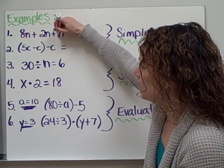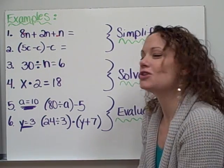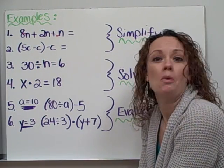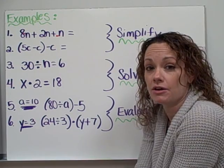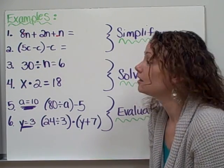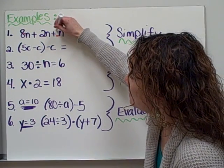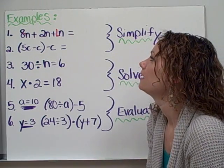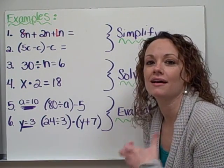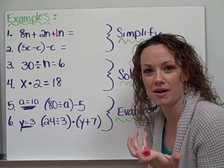Now, notice right here, next to this n, there's no number. Does anyone know what that means when there's no number there and just a simple letter? What it means is that there's kind of like an invisible 1 there. It means that there's just 1n, or the n is just worth 1.